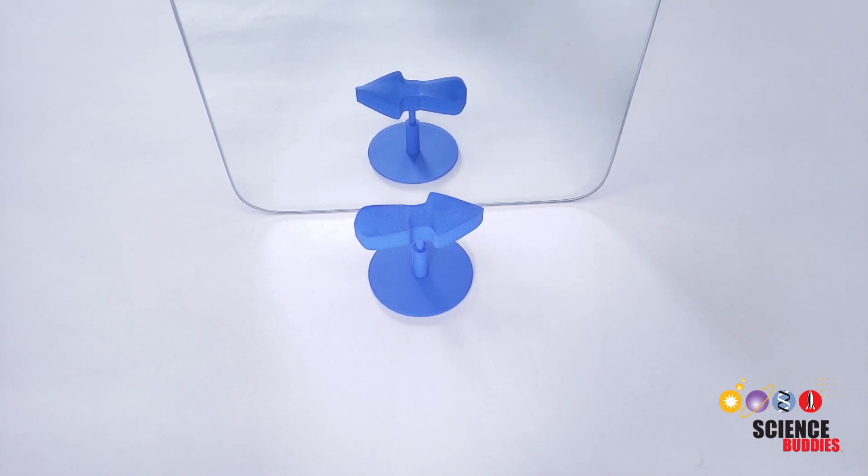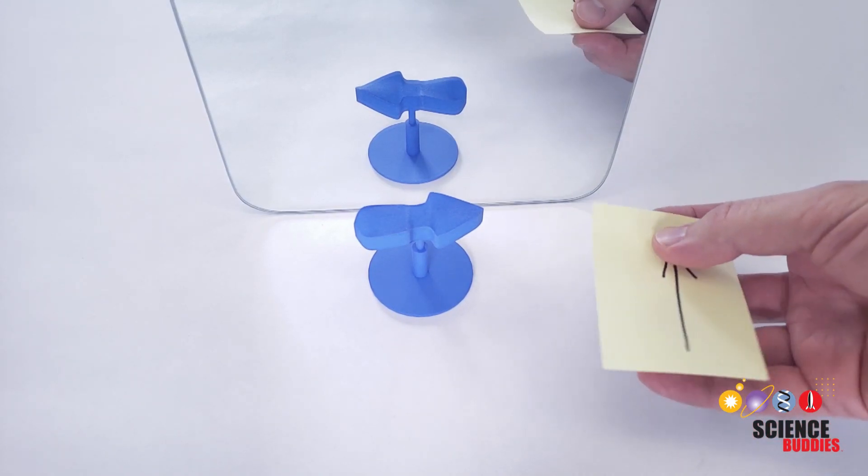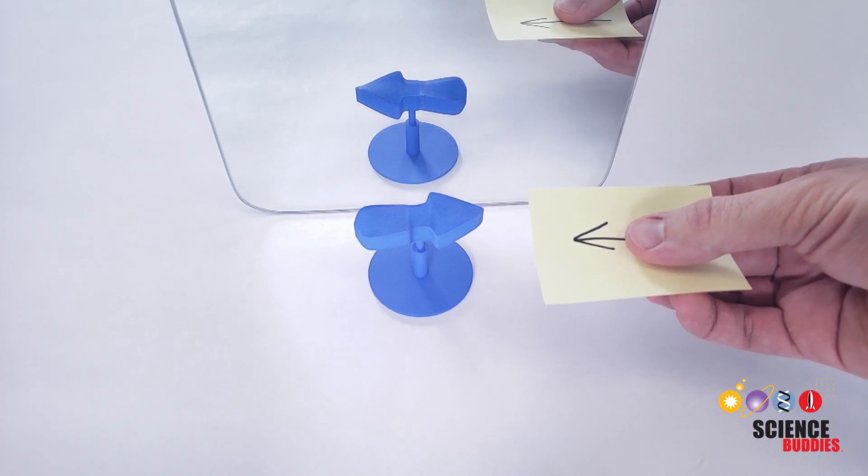There's no tricky editing or digital alterations to this video. Here's a regular arrow drawn on a piece of paper, and you see that when I spin it, it behaves normally.